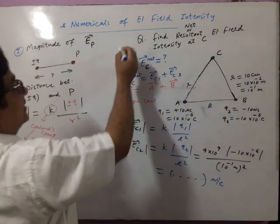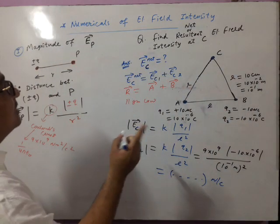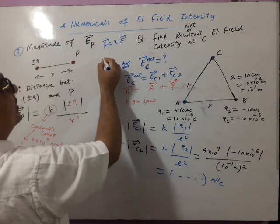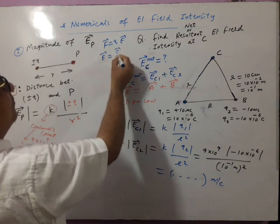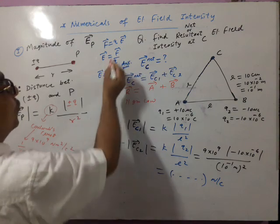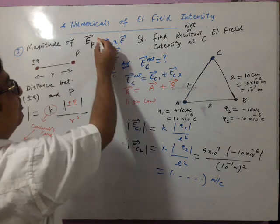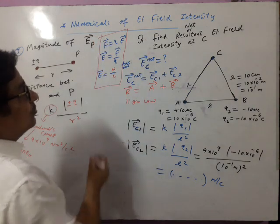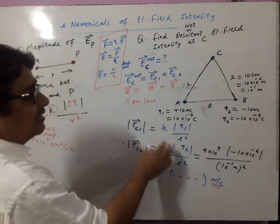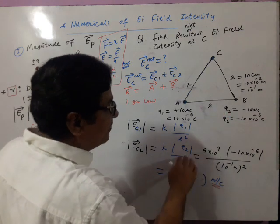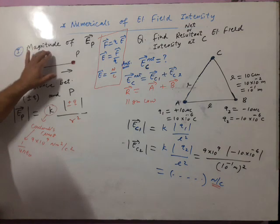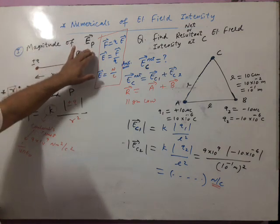Write units as Newton per coulomb. You can solve EC1 and EC2. Since data is taken symmetrically, they will have the same magnitudes. This is part 1: how to find magnitude of electric field intensity at any point P.